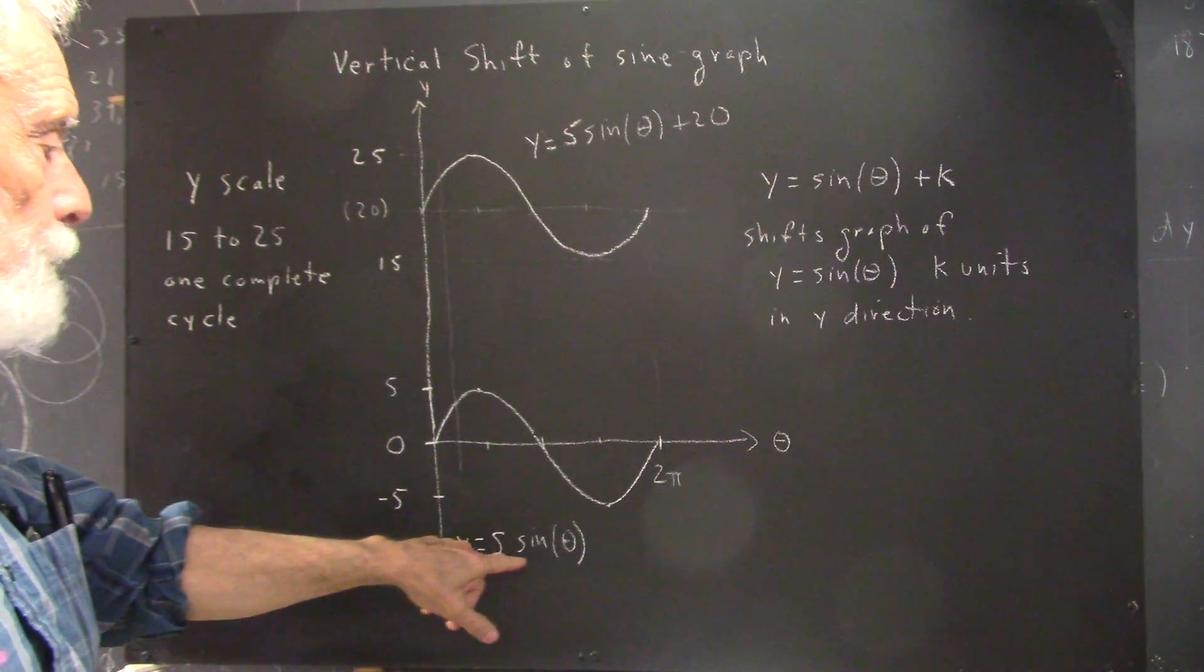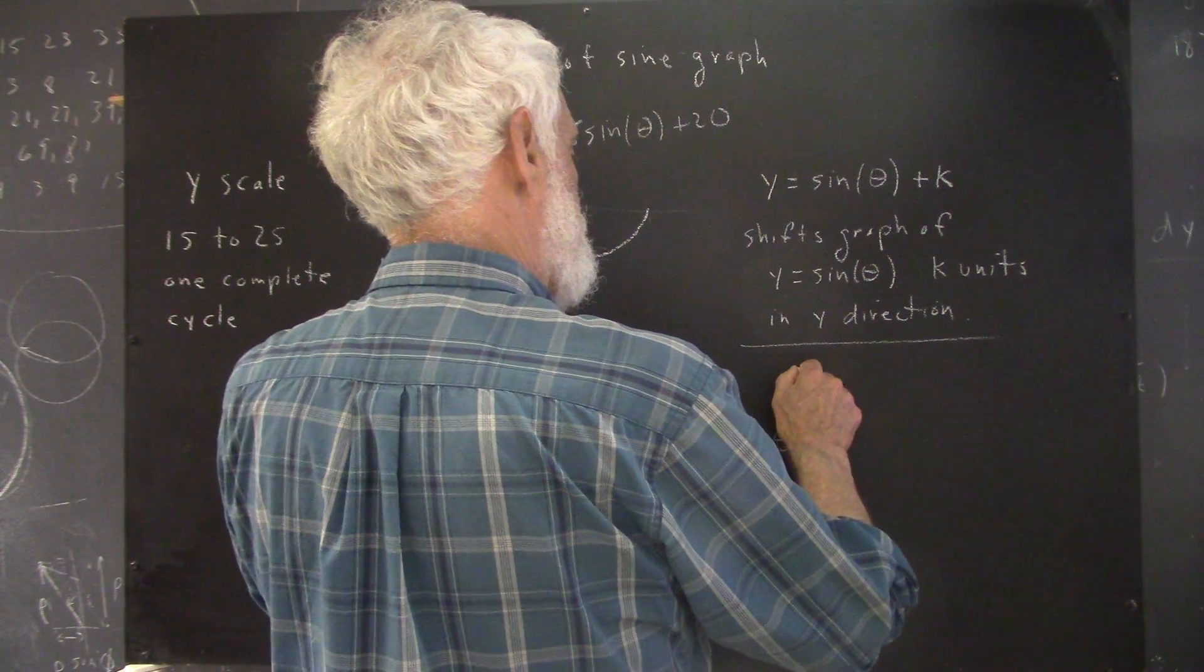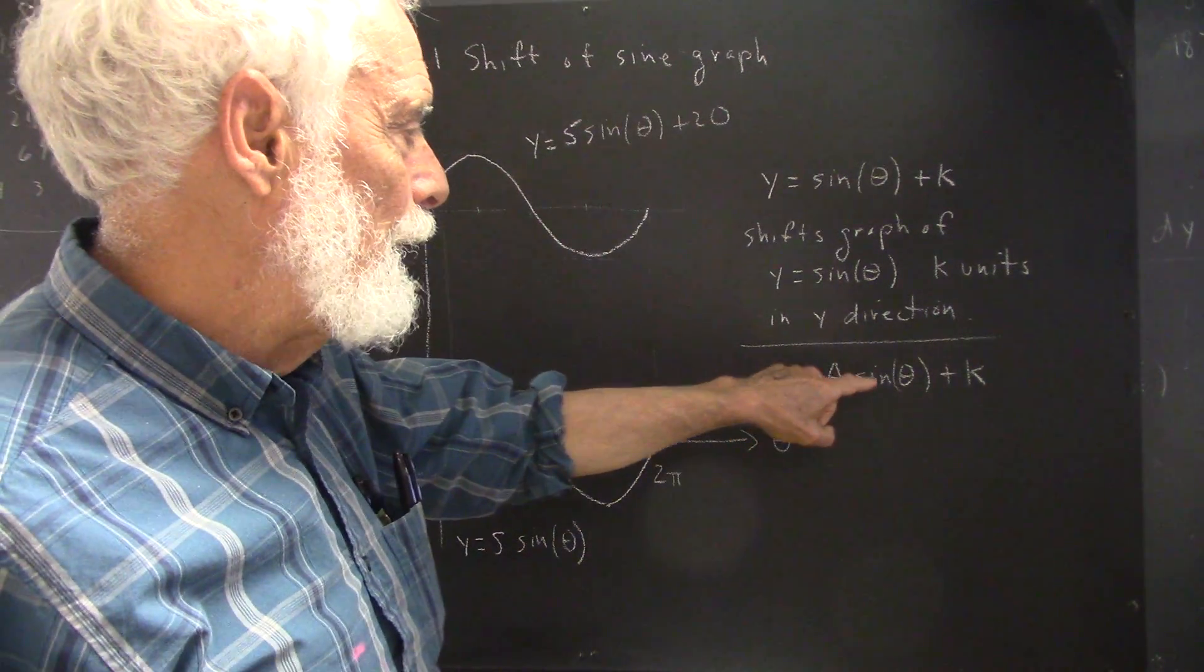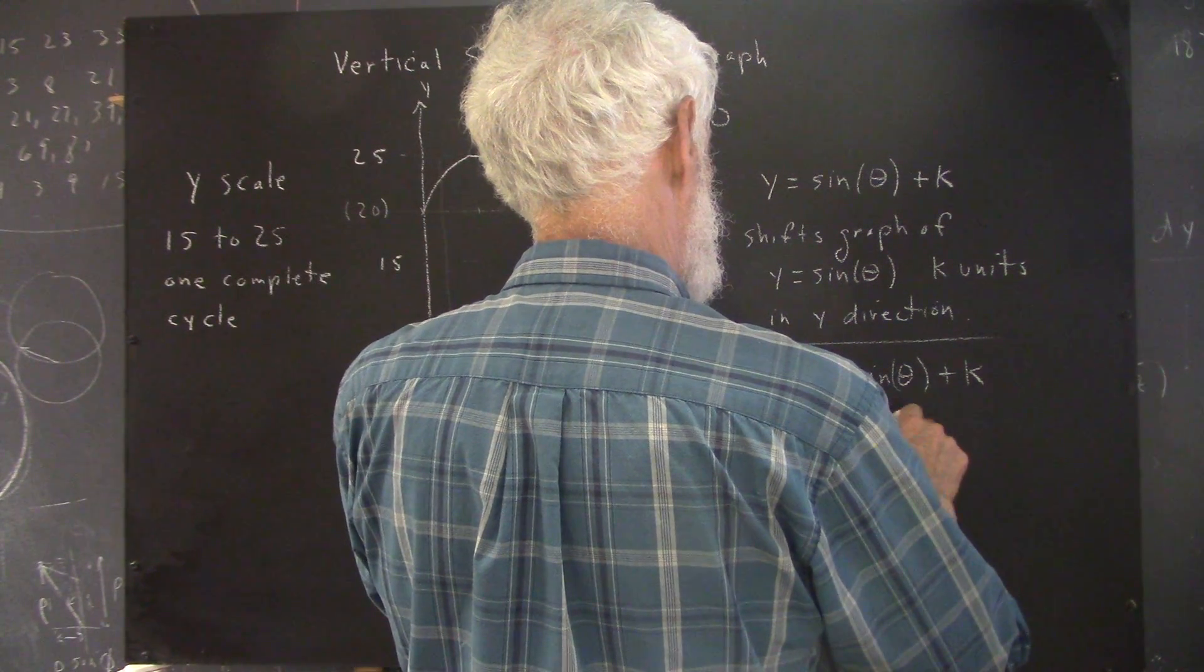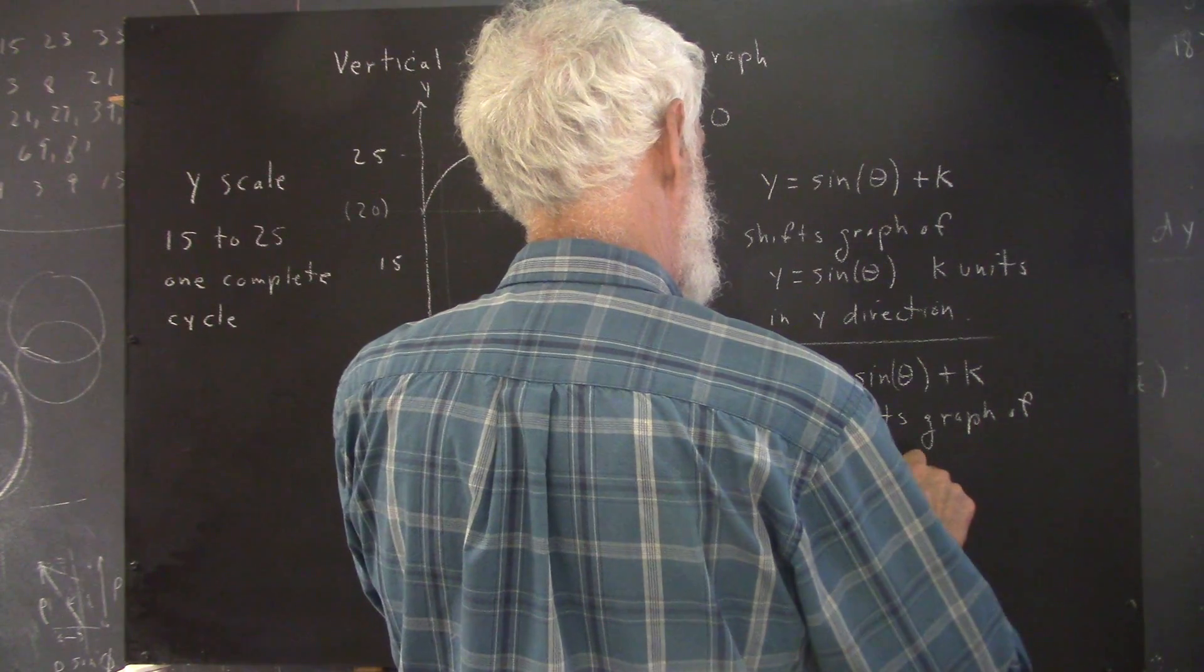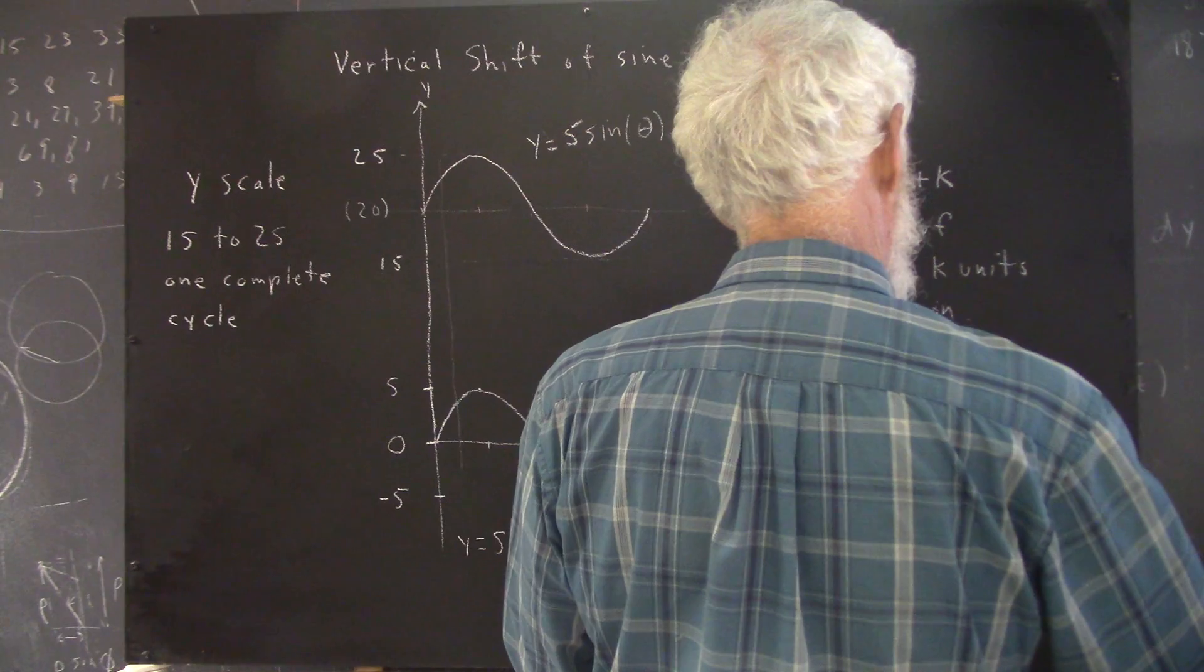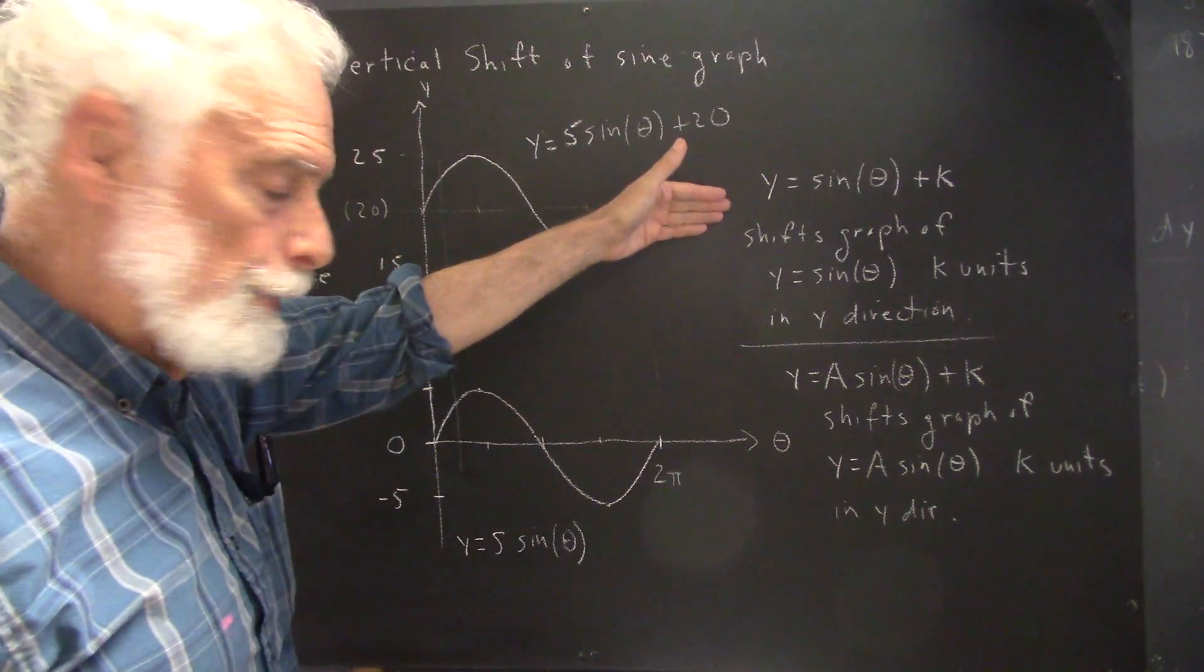Now, this isn't just a y equals sine theta function. This is y equals 5 sine theta. That's of the form y equals a sine theta. If we take the graph of y equals a sine theta plus k, that's... I'm going to shift the graph of y equals a sine theta. k units in the y direction. Just as the case here.